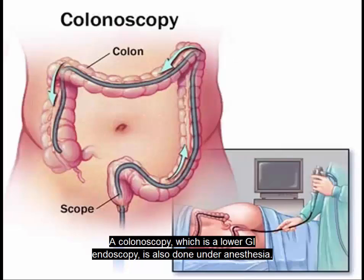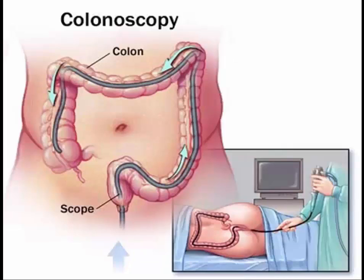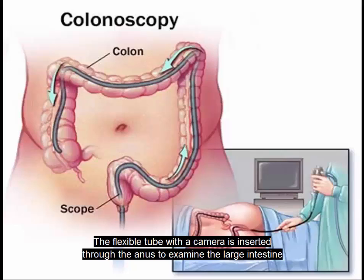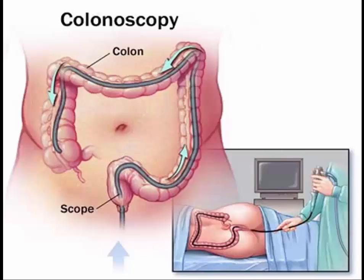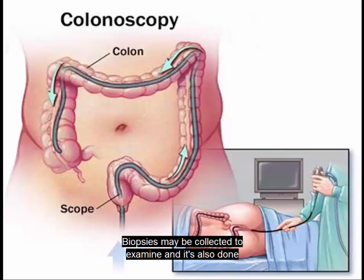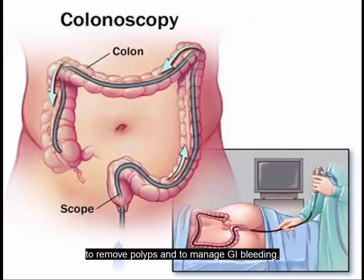A colonoscopy, which is a lower GI endoscopy, is also done under anesthesia. The flexible tube with a camera is inserted through the anus to examine the large intestine and the end of the small intestine at the terminal ileum. Biopsies may be collected, and it is also done to remove polyps and to manage GI bleeding.